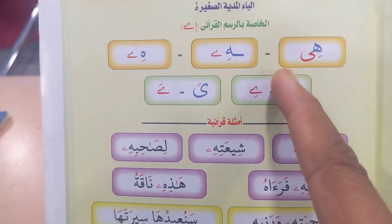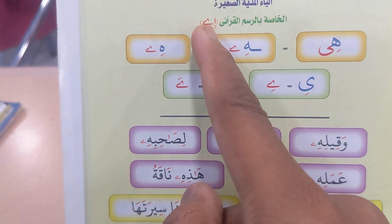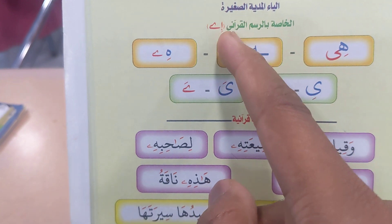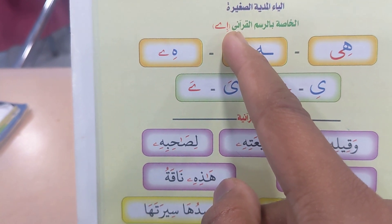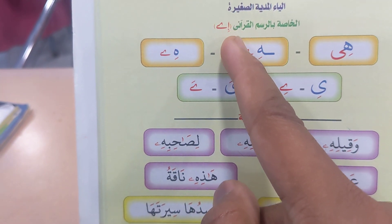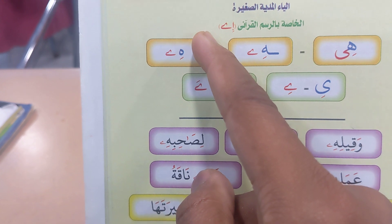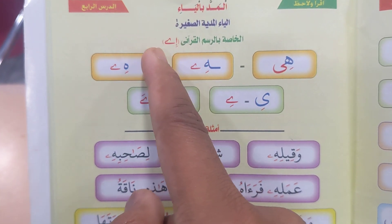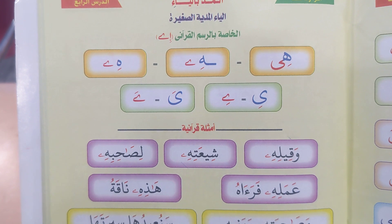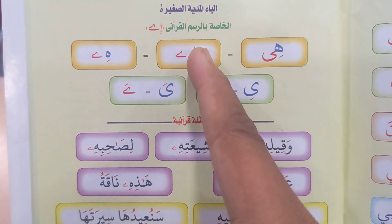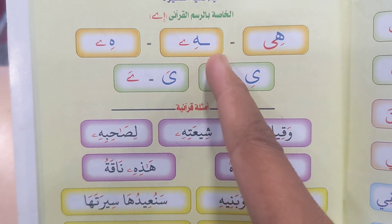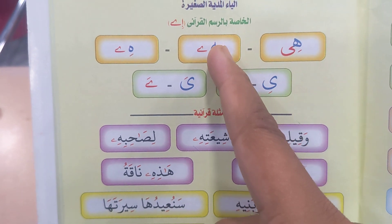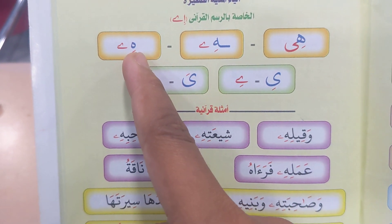This is the sign of Maddiya Sagheera right here. This is preceded by Alif Hamza Kasera. The elongation is the same way. The Maddiya Sagheera comes after Ha like this, or Ha like this.